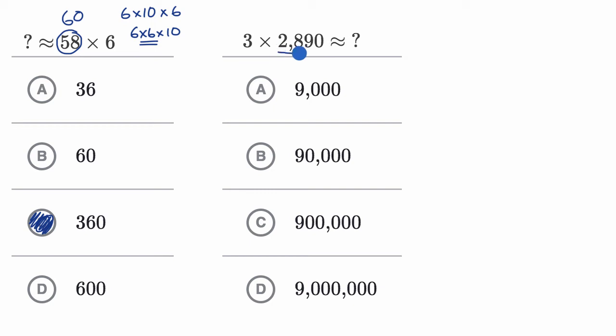All right, so 2,890 is not an easy thing to multiply in our heads. But I could say that's kind of close to 3,000. So this is going to be approximately equal to 3 times 3,000. Now what's 3 times 3? That's 9. So what's 3 times 3,000? It's going to be 9,000.